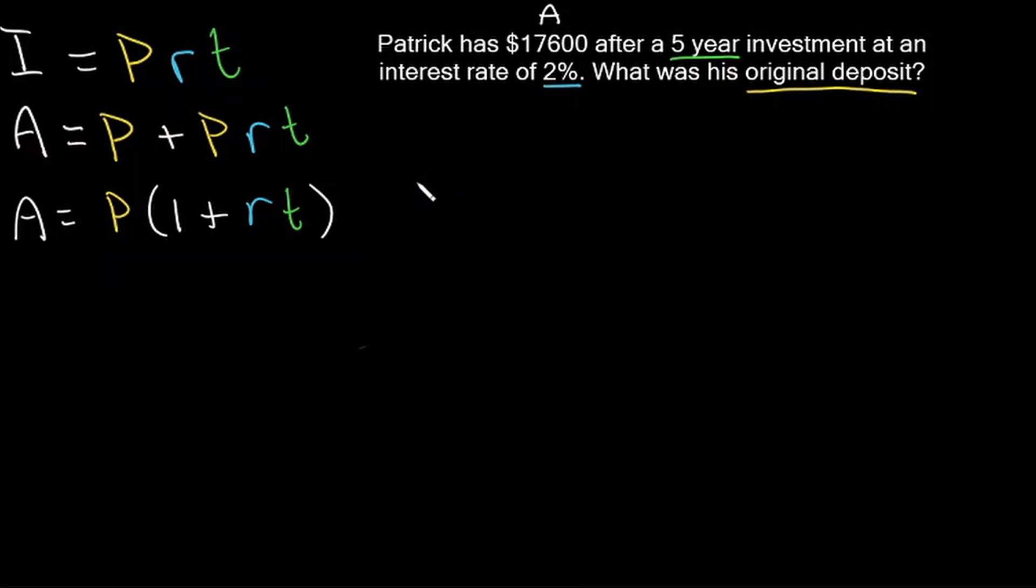So let's plug in the values that we know. We know our total amount is 17,600. That's going to be equal to our principal, which we do not know, multiplied by 1 plus our interest rate of 2%, which is 0.02 as a decimal, multiplied by our time, which is 5.